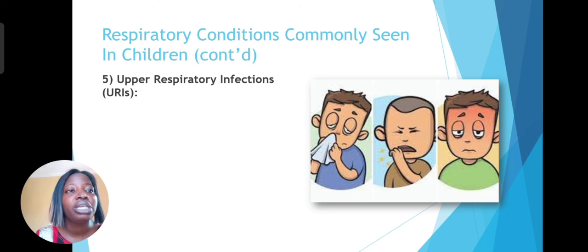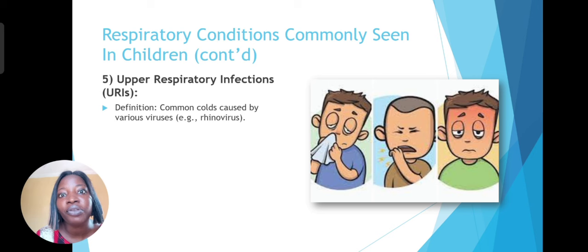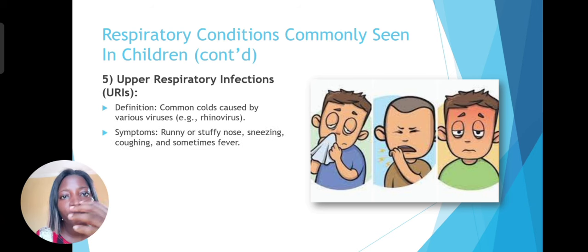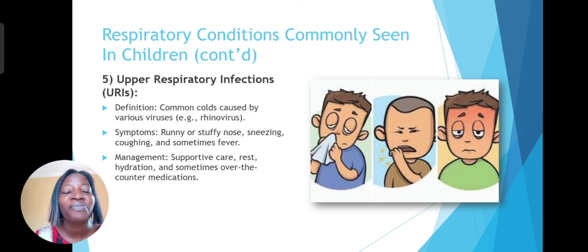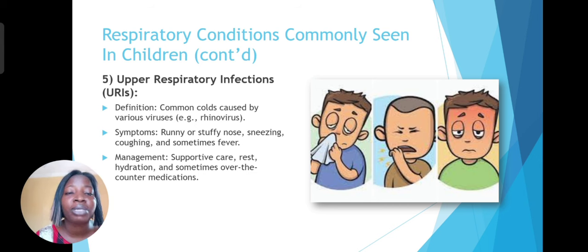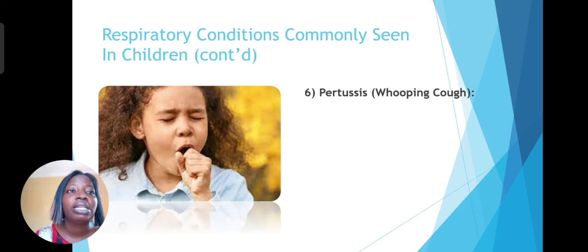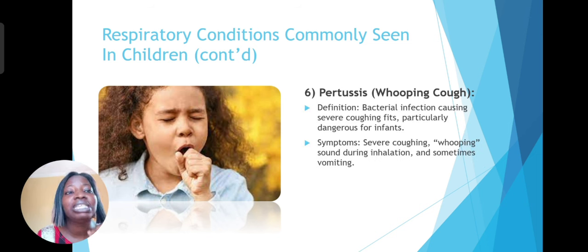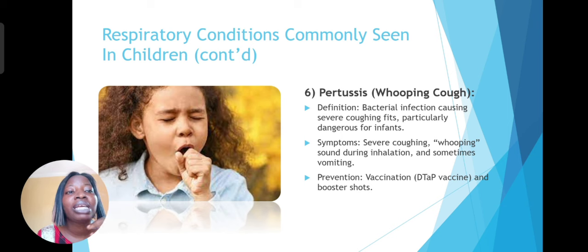Then we have URIs — upper respiratory infections, common colds caused by various viruses, most especially rhinoviruses. Symptoms include stuffy nose, sneezing, and coughing. It's very important that we distinguish between these different respiratory conditions, and that is why proper diagnosis is given so that the right treatment and management is given as well. For these URIs, sometimes OTC medications are given and definitely hydration. Then we have whooping cough, a bacterial infection causing severe coughing fits, particularly dangerous for infants and little children. There is a vaccination for whooping cough and a booster as well.